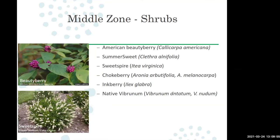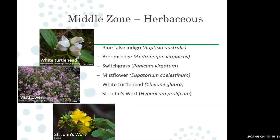In the middle zone there are tons of options. American beautyberry, summersweet, sweetspire, chokeberry, and inkberry viburnum are all great shrubs that attract birds. Not only do they have lovely flowers, but they also produce fruit that attracts songbirds. So if you're looking to attract more songbirds, these are good shrubs for this type of garden.